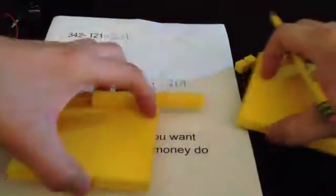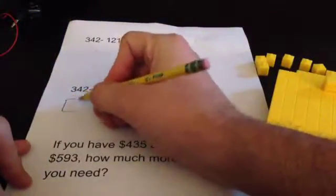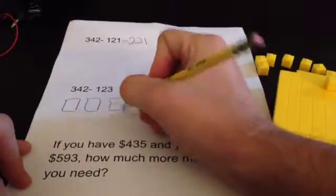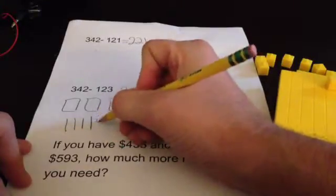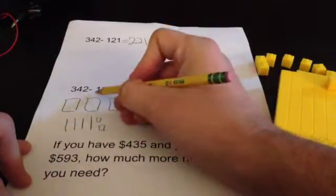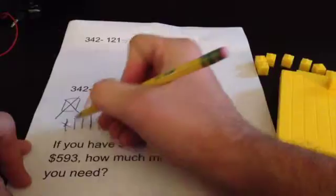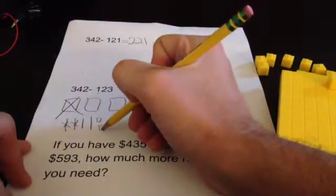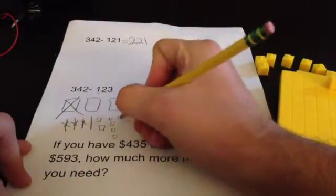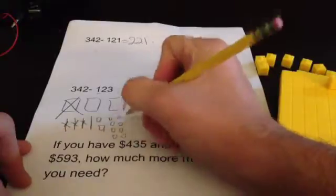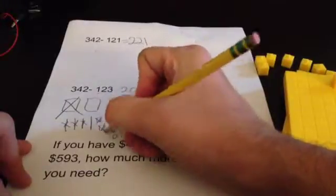And if I were going to do it as a picture on my paper, I would have 342. 100, 200, 300, 310, 320, 330, 340, 341, 342. Take away 1 hundred. Take away 2 tens. Take away 3 ones. Uh-oh. I only have 2 ones. I'm going to swap this out for 10 ones. 1, 2, 3, 4, 5, 6, 7, 8, 9, 10 ones.